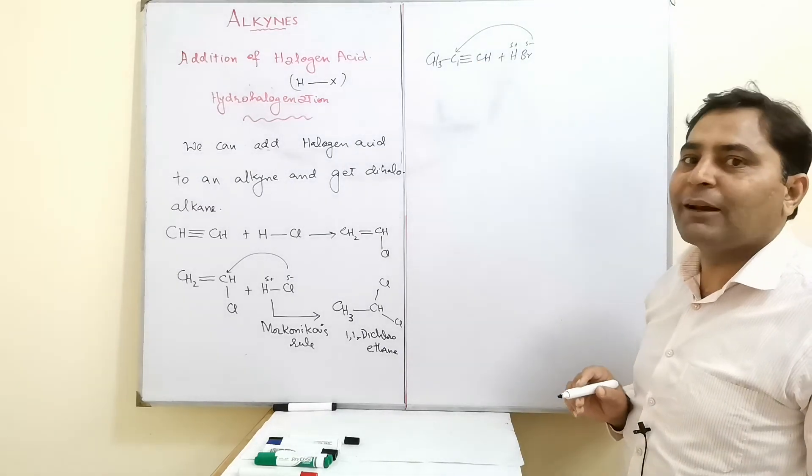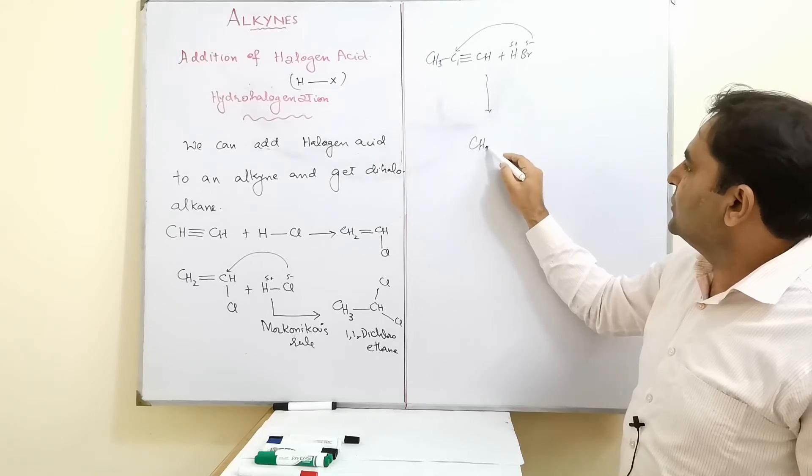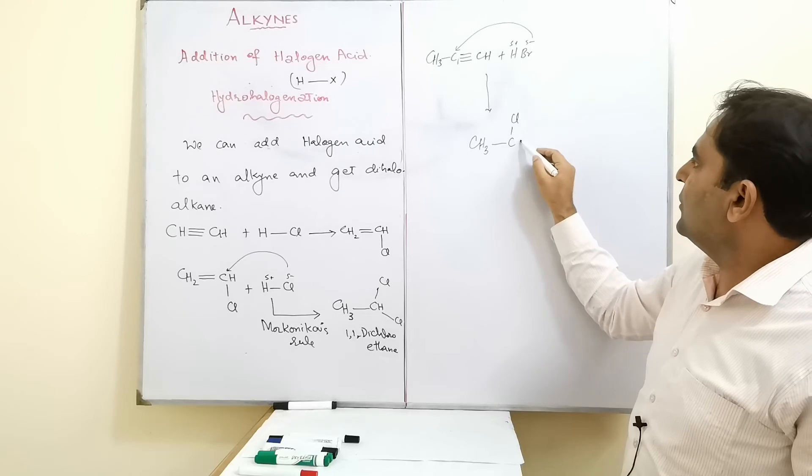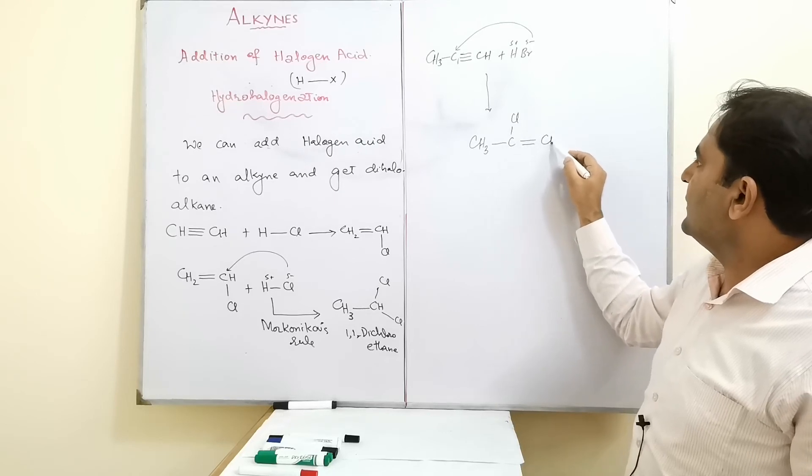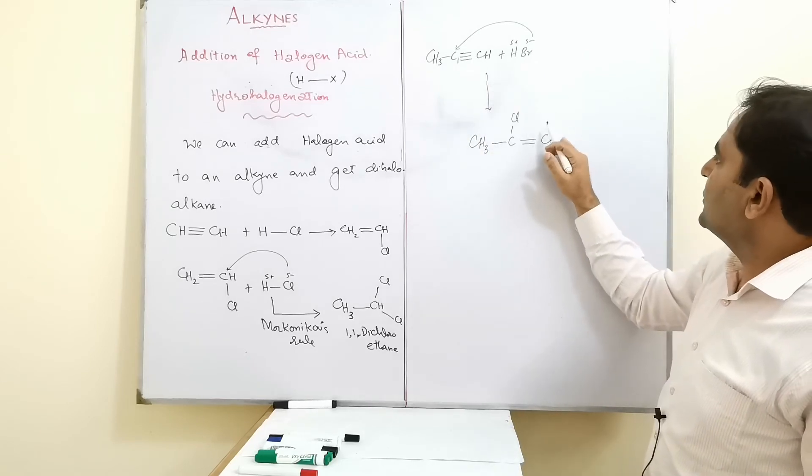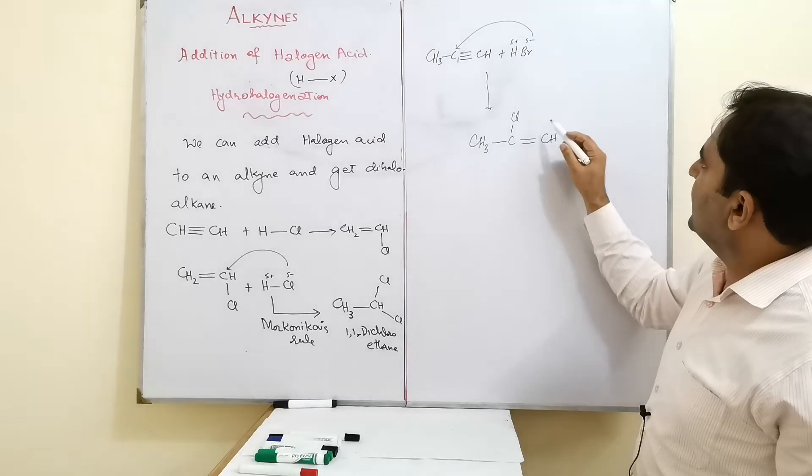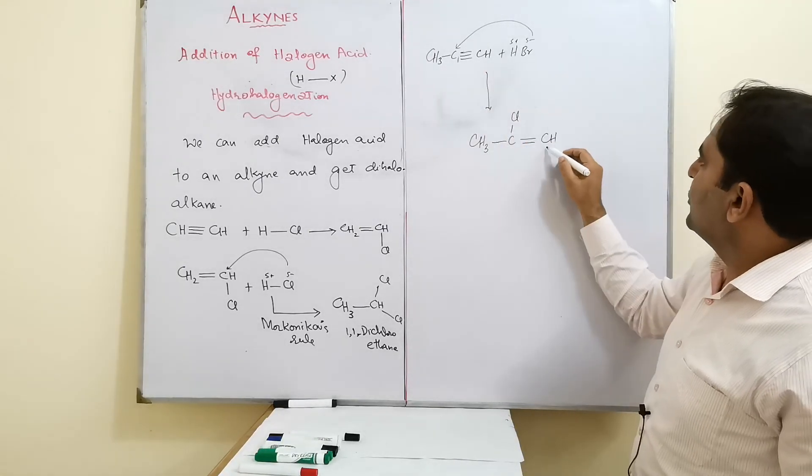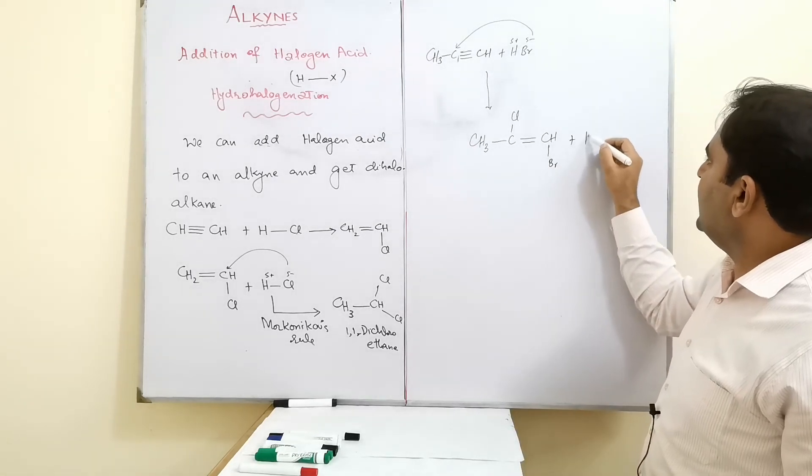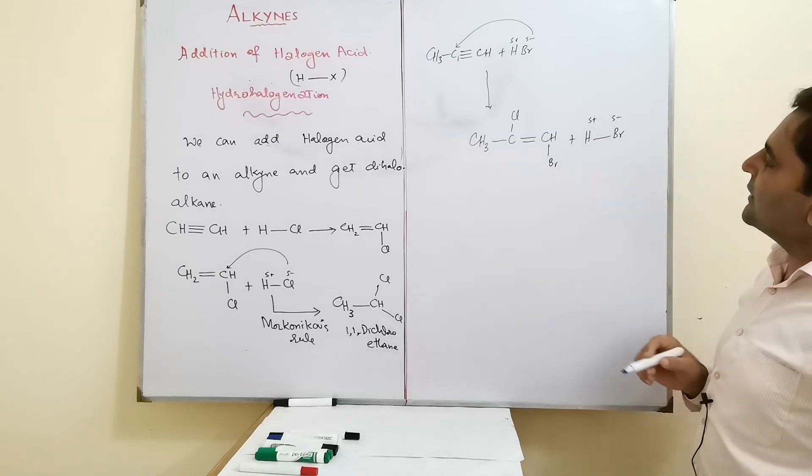Negative part goes to that carbon which has the least number of hydrogen atoms. I have added hydrogen here and bromine here. Sorry for that - negative part goes to that carbon which has least number of hydrogen atoms, and bromine I put here.